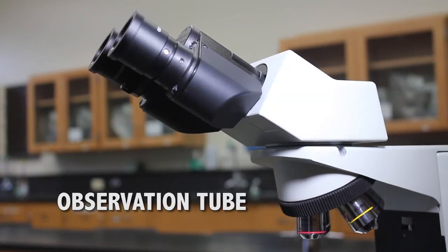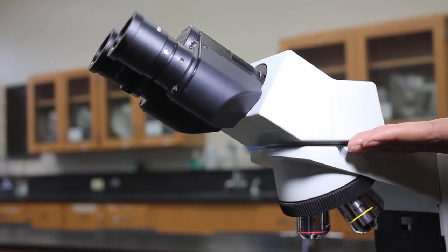Observation tube. This should be fixed in the forward position. If it is not, alert your instructor because rotation may damage the microscope.